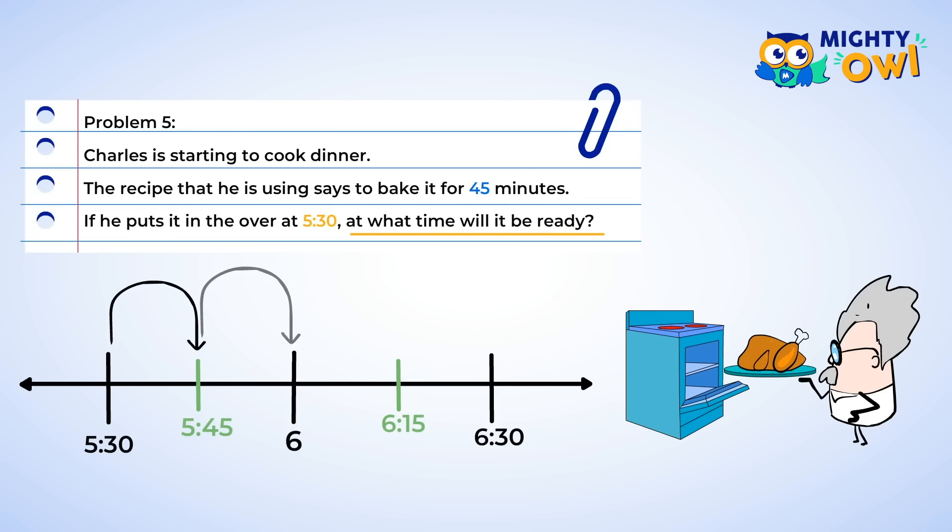Okay, finally, let's take a look at Charles. Charles is starting to cook dinner. The recipe that he's using says to bake it for 45 minutes. If he puts it in the oven at 5:30, at what time will it be ready? Alright, we can do this. Let's start by creating the number line. 45 is three 15-minute intervals, we know that. So if we start at 5:30 and move over three intervals, we arrive at 6:15.